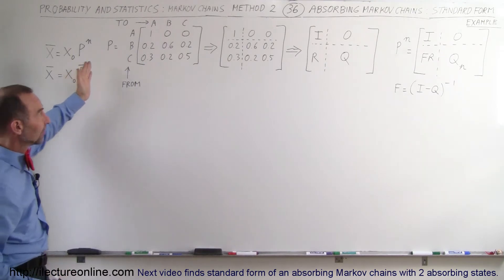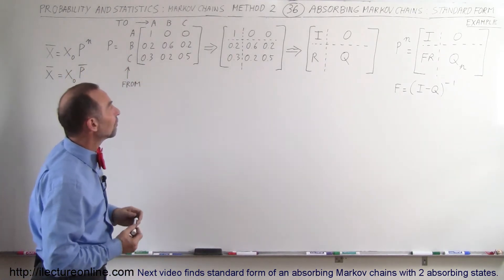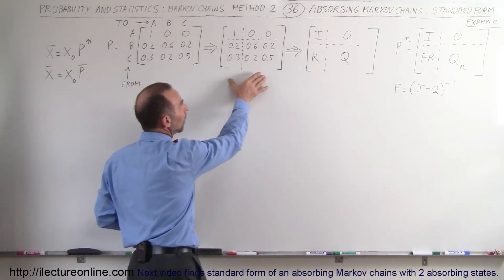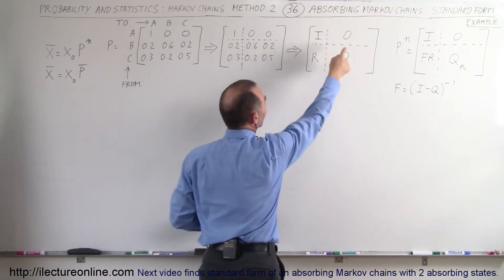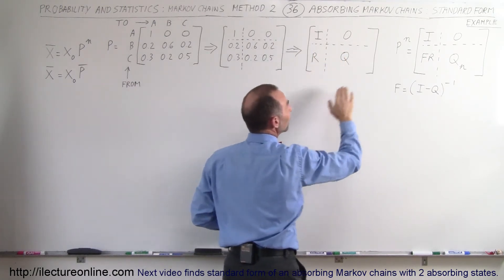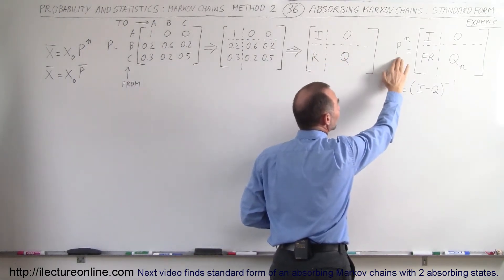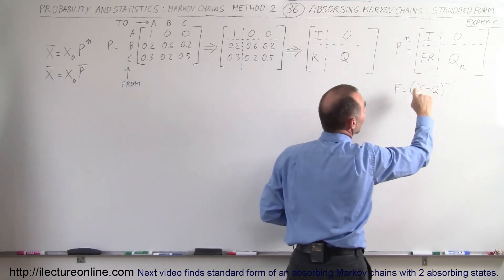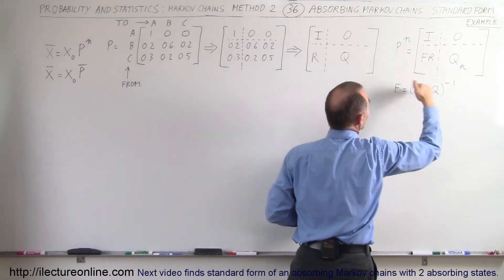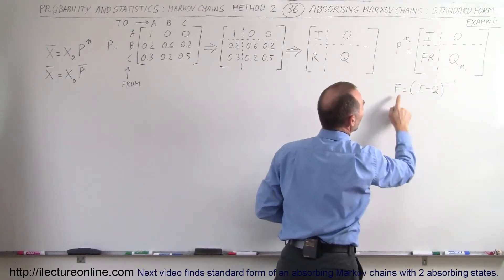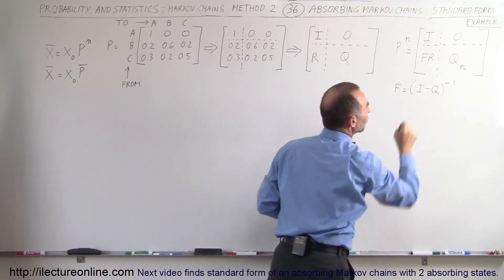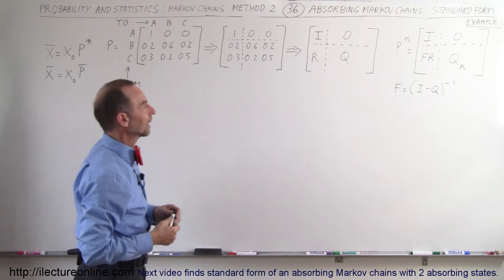So here was the same matrix that we had in the previous video where we break it up in quadrants. We then define it like I, 0, R, Q matrix, and then the final stable transition matrix can be found by ending up with something that looks like this where F is what we call the fundamental matrix. So let's go ahead and calculate that.